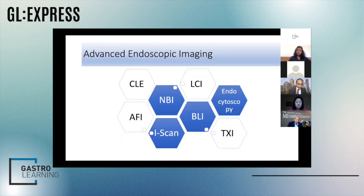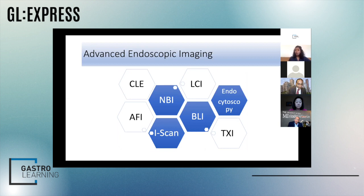Advanced endoscopic imaging — there are obviously many different types. Olympus produces NBI, TXI, and AFI; Fuji does BLI; and Pentax does iScan. The fundamental basis is that they enhance mucosal patterns and vessel patterns, allowing us to classify polyps, appreciate any degree of neoplasia, look at margins for resection, and post-resection, appreciate any residual polyp tissue.